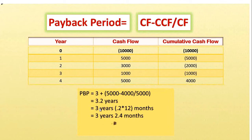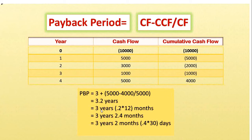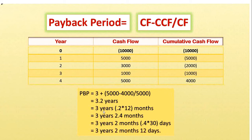To find the days, we take the 0.4 and multiply by 30 because there are 30 days in a month: 0.4 multiplied by 30 gives us 12 days. So our final answer is three years, two months, and 12 days. If the result had been something like 12.5 days, we would not need to convert further into hours, minutes, or seconds — converting to days is more than enough.